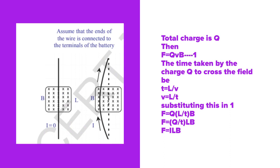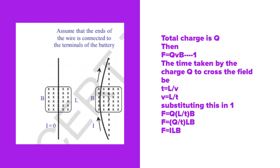When single charge is small q, and total charge is taken as capital Q, then the formula will be F = QvB. The time taken by the charge Q to cross the field is t = L/v.